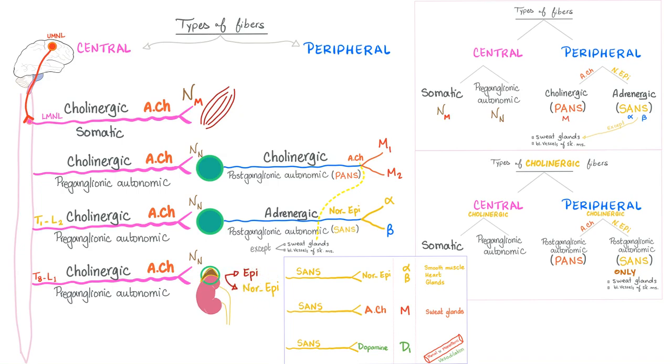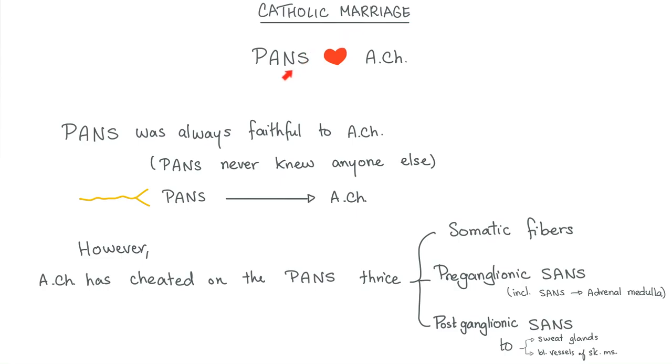There is a catholic marriage between parasympathetic and acetylcholine. Whenever you see parasympathetic, you'll always see acetylcholine being released. Para is always faithful to acetylcholine. Para never knew anyone else. When I say parasympathetic fiber, you say it's gonna release acetylcholine, therefore it is cholinergic.